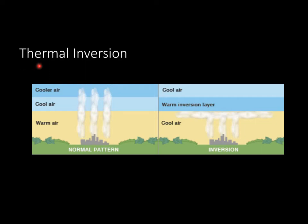Now let's discuss thermal inversion, which is very important to understand. In a normal pattern, you have warm air on the bottom, then cool air, then cooler air, so there's a nice flow. However, during a thermal inversion, you have cool air trapped by a warm inversion layer of air, with cool air again on top. Take a city such as LA or Denver — these cities are surrounded by mountains and are in a valley. Dense, cool air is stuck closer to the ground, trapped by a warm inversion layer, which creates photochemical smog. All this pollution is trapped, which is why you get a thick, smoggy haze in somewhere like LA.